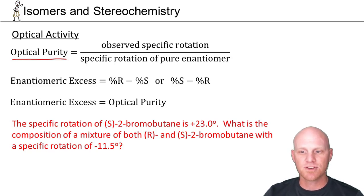In this example below, the specific rotation of (S)-2-bromobutane is +23.0°. What is the composition of a mixture of both (R)- and (S)-2-bromobutane with a specific rotation of -11.5°?